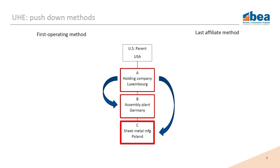In this simplified ownership chart, the U.S. parent multinational is at the top of the chain. Affiliate A is the first entity outside of the U.S. — it's a holding company in Luxembourg. This is where the position statistics currently reflect this multinational's direct investments: the values of affiliates A, B, and C are all currently recorded in Luxembourg by international guidelines.